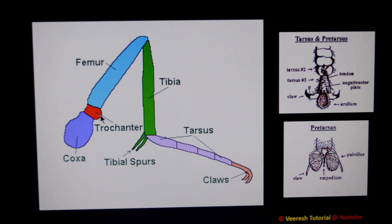The second segment is the trochanter. In almost all insects, it is single-segmented, but in dragonflies, damselflies, and wasps, it seems to be 2-segmented. When the trochanter appears 2-segmented, it is called the trochanterus.